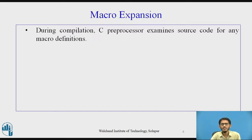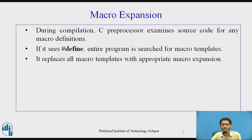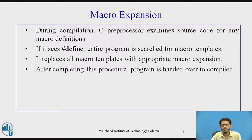Now let us see what macro expansion is. At the time of compilation, the C pre-processor examines the source code for any macro definitions. If it sees any `#define`, it searches the entire program for such macro templates. Wherever it finds the macro templates, it replaces all of them with their appropriate expansions. This is done at the time of pre-processing. After completing this procedure, the program is handed over to the compiler for compilation.